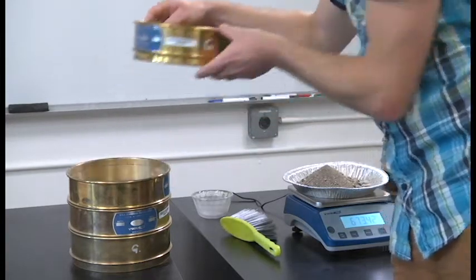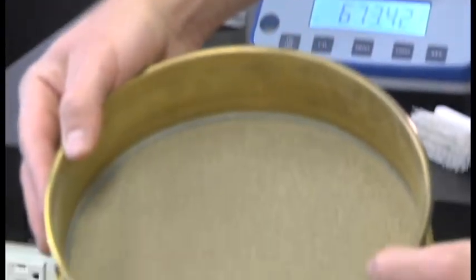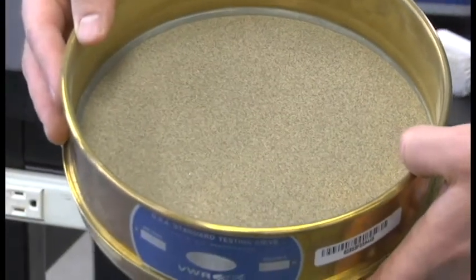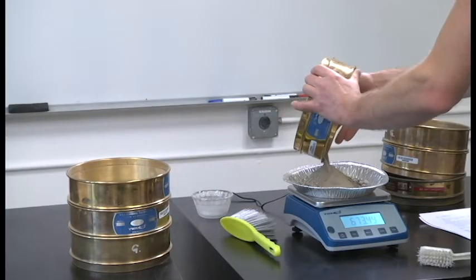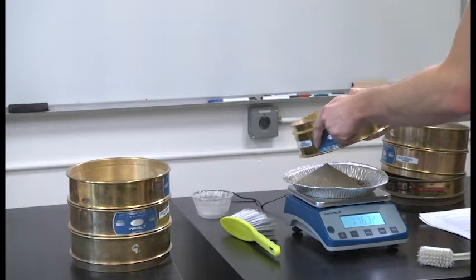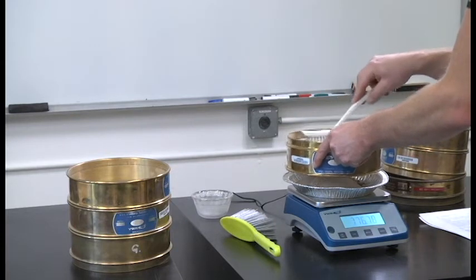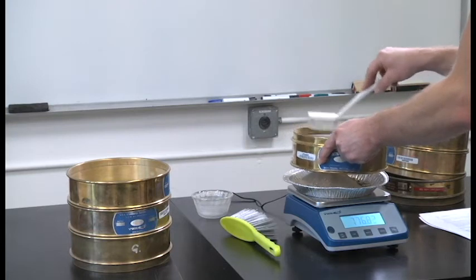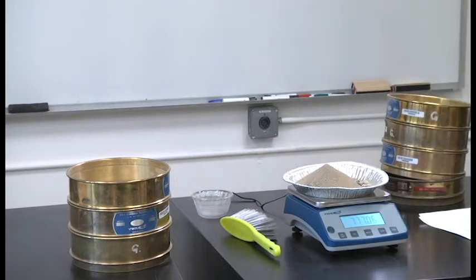Keep progressing down the stack. Now we're on the number sixty sieve. You can see these are finer sand-sized particles. Cumulative mass: 777.10 grams.